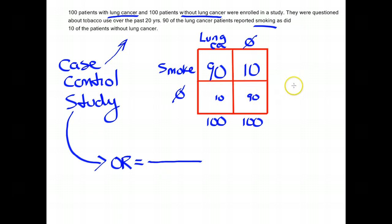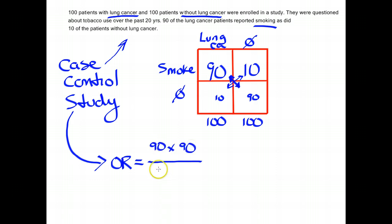The easiest thing to remember about the formula for odds ratios is what's called the cross products. We multiply these two diagonal numbers by each other and divide by the cross product of the other two numbers. There is a more complex formula relating odds to probabilities, but it's worth just memorizing: cross products of these two boxes divided by these two boxes. So in the numerator we have 90 times 90, and in the denominator 10 times 10. That gives us 8,100 divided by 100, which equals 81.